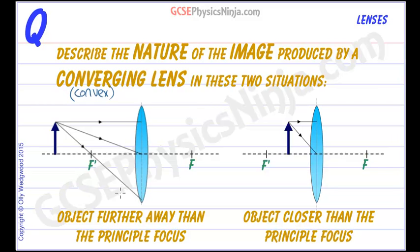Now the first situation is where the object is further away than the principal focus. So here's our object and the object is placed further away from the principal focus which is here, and the principal focus appears on both sides of the lens because light can travel in both directions.